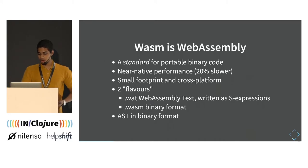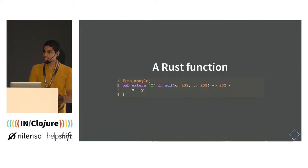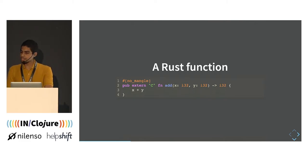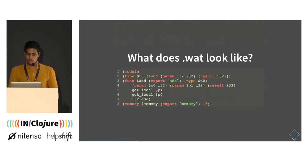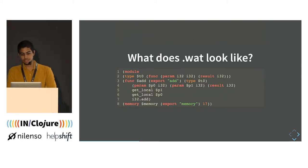Let's see what Wasm actually looks like by compiling Rust to .wat. For those who don't know, Rust is a programming language like C/C++ but with more safety guarantees. Here's a Rust function called 'add' that adds two numbers and returns their sum. When you compile it to .wat, it looks like symbolic expressions — and it has some resemblance to the Lisp family of languages, especially Clojure.